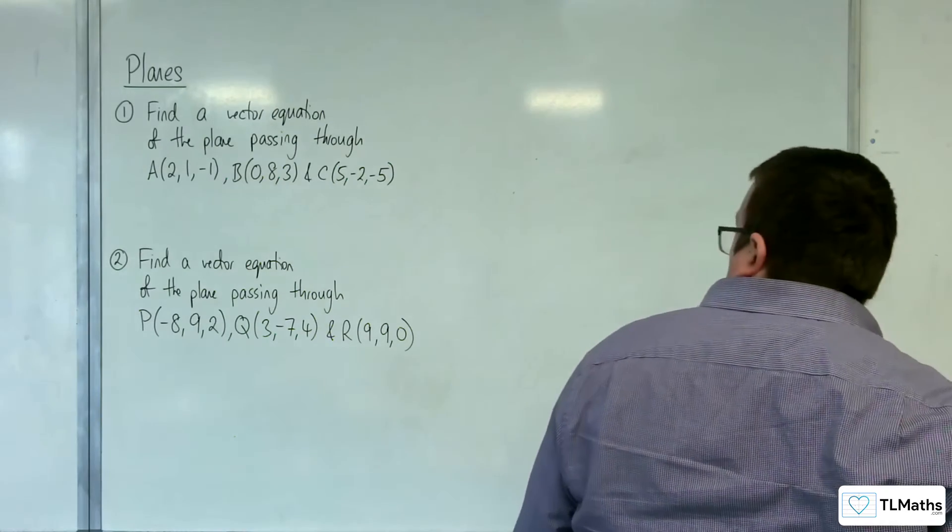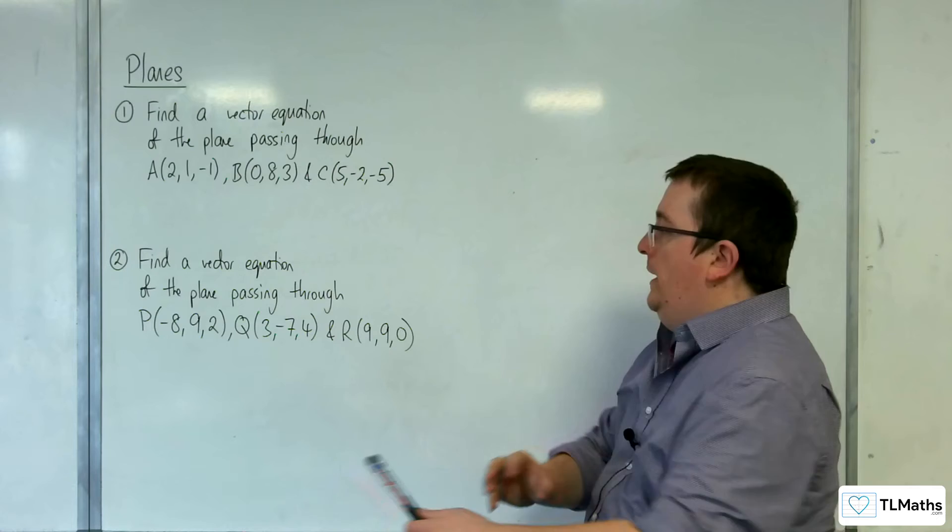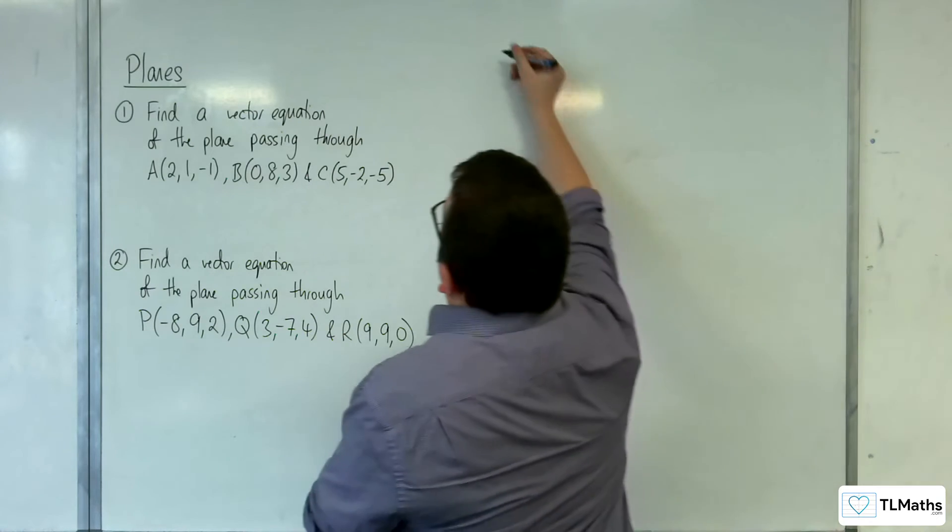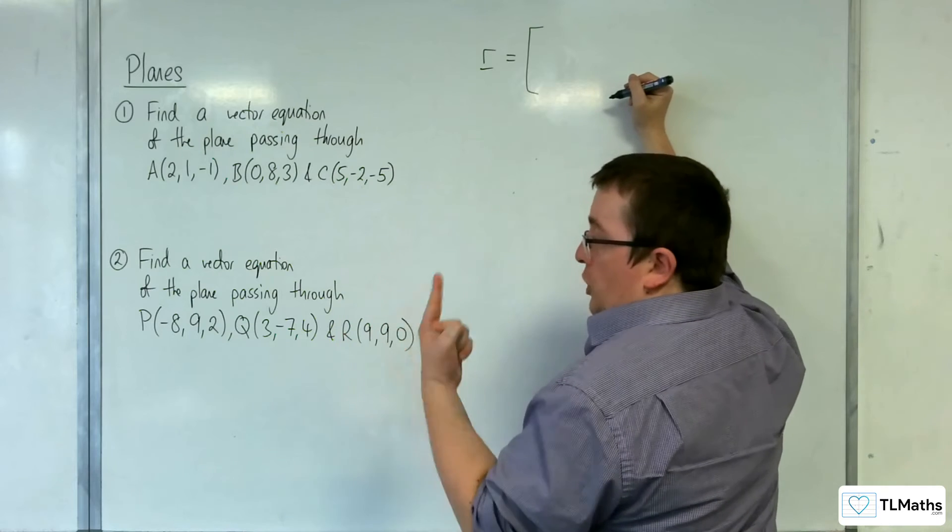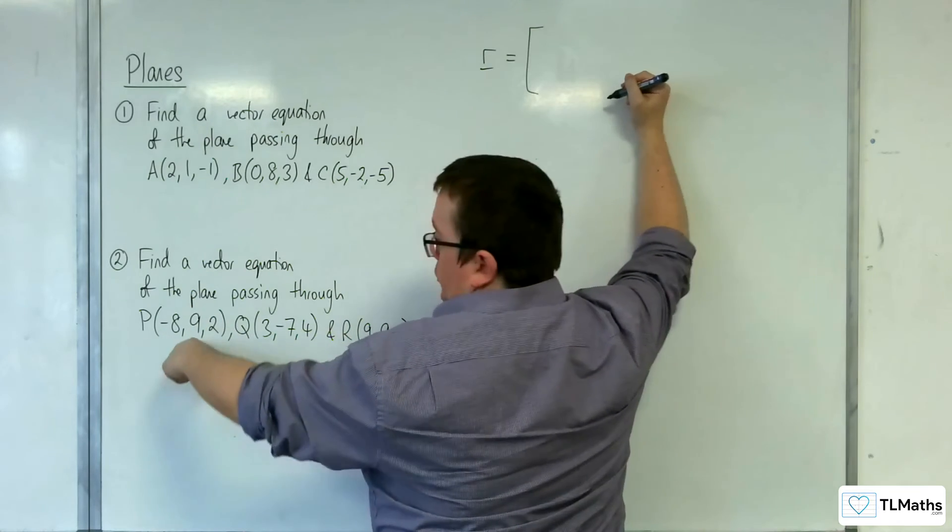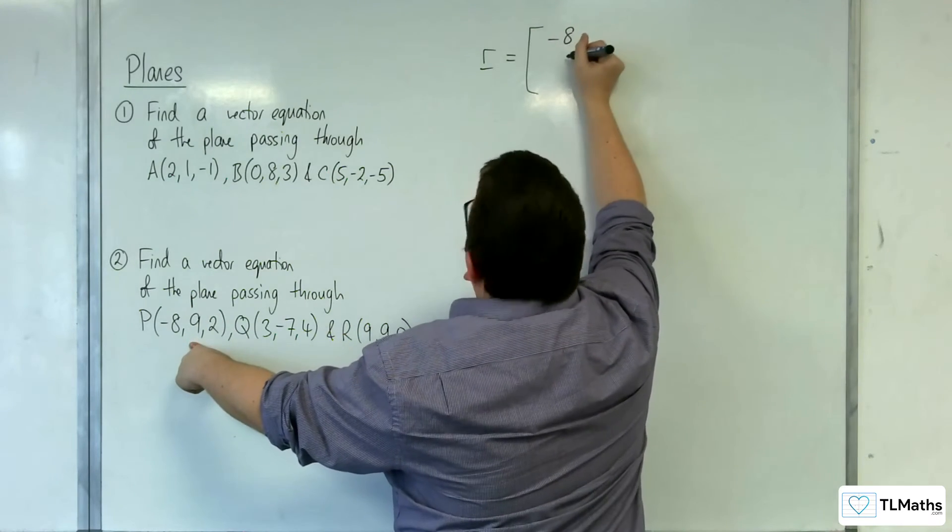So the second one, find a vector equation of the plane passing through P, Q, and R. So the first thing I would do is I just need to find, well, choose one position vector. So let's choose P, minus 8, 9, 2.